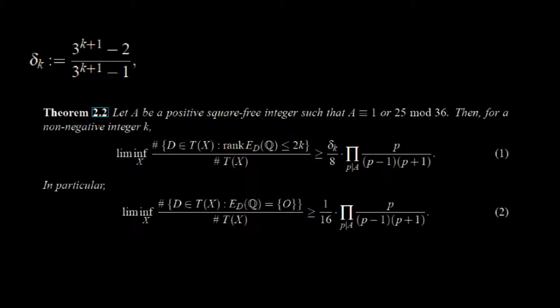T of X represents the set of positive square-free integers that are smaller than X. So the theorem computes some bounds on the average numbers of quadratic twists with certain Mordell-Weil ranks.